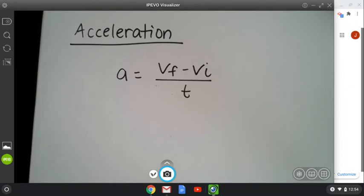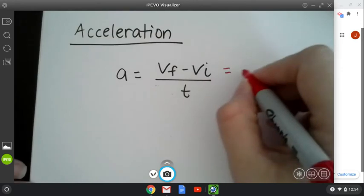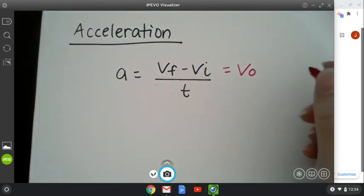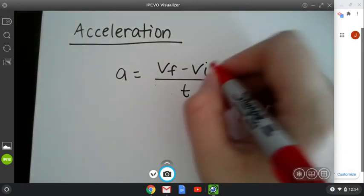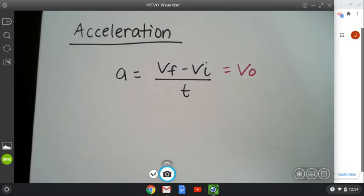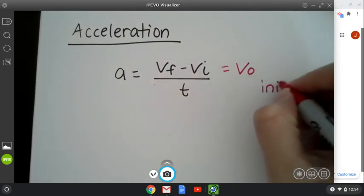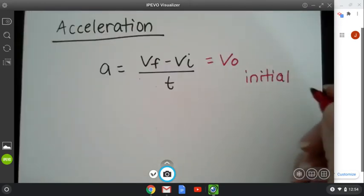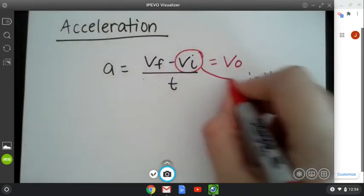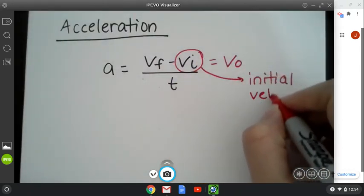Now, sometimes when you see vi, you might not see vi, you might see vo instead, or v0. They mean the same thing. I like to use vi because of what it stands for. And it stands for initial. So your vi right here is actually your initial velocity.